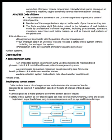The ACM/IEEE Code of Ethics: the professional societies in the US have cooperated to produce a Code of Ethical Practice; members of these organizations sign up to the code of practice when they join. The code contains eight principles related to the behavior of and decisions made by professional software engineers, including practitioners, educators, managers, supervisors, and policy makers, as well as trainees and students of the profession. Ethical dilemmas include: disagreement in principles with the policies of senior management; an employer acting in an unethical way and releasing a safety-critical system without finishing testing; and participation in the development of military weapon systems or nuclear systems.